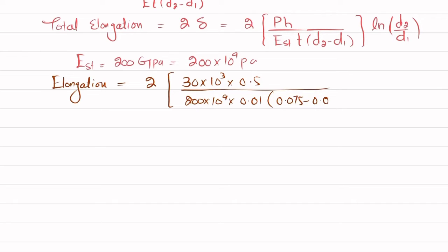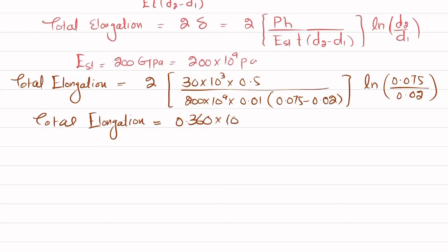When you solve this, you will get the total elongation equal to 0.360 times 10^-3 meters, or that will be equal to 0.360 millimeters. So that will be the total elongation.